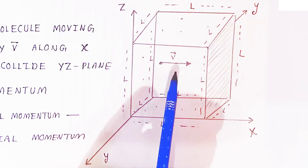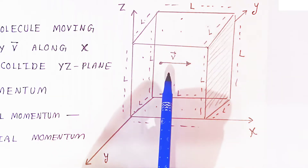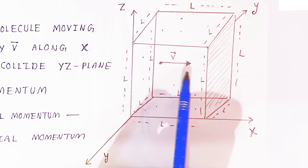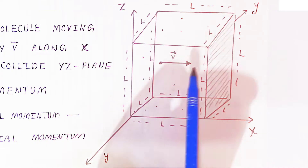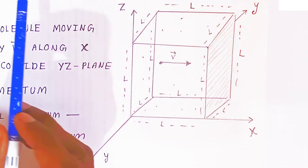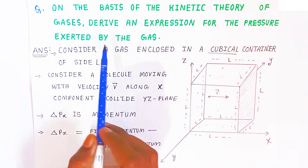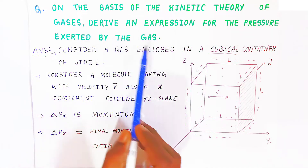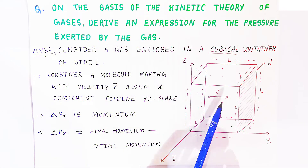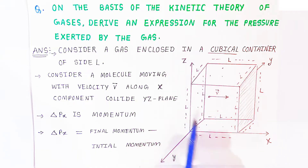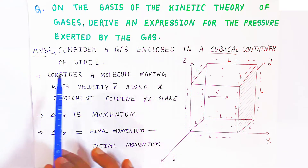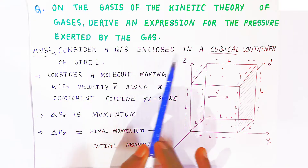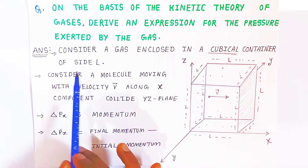Now this is the cube — inside there is gas present. How much pressure this gas is exerting on all sides of the cube, that is what we are going to find out on the basis of kinetic theory. Consider a gas enclosed in a cubical container of side L.